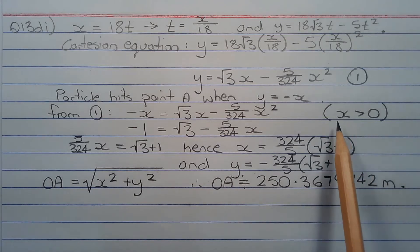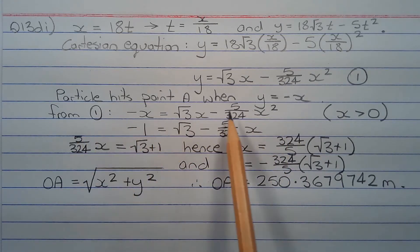Noting that x must be greater than zero since x in fact represents a horizontal distance, we can divide through by x. So we end up with negative 1 equals root 3 minus 5 over 324 times x.